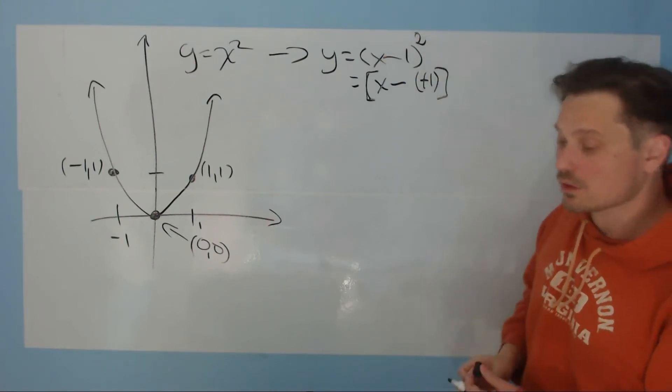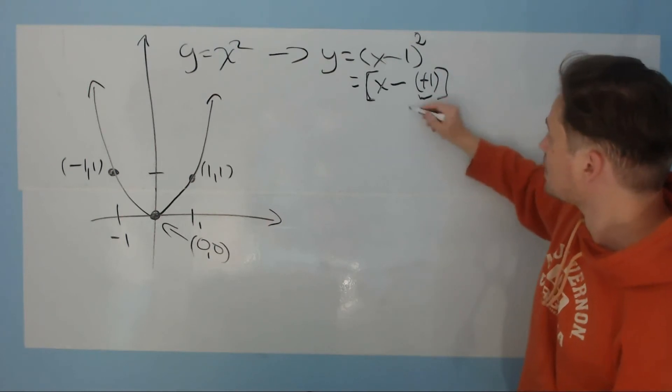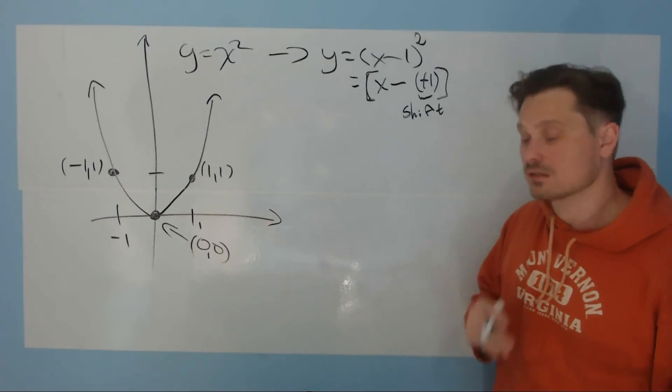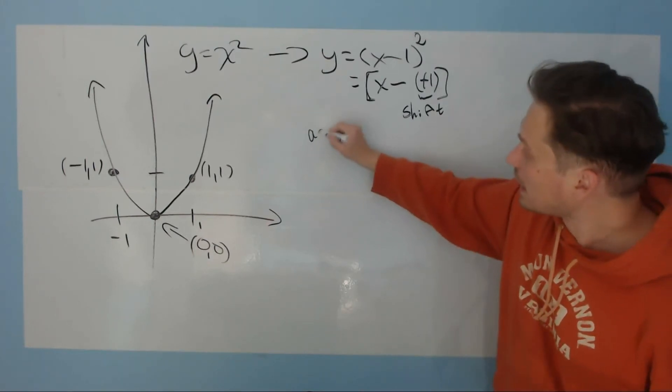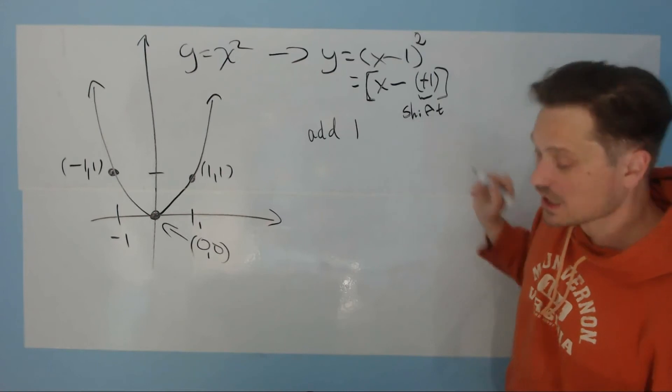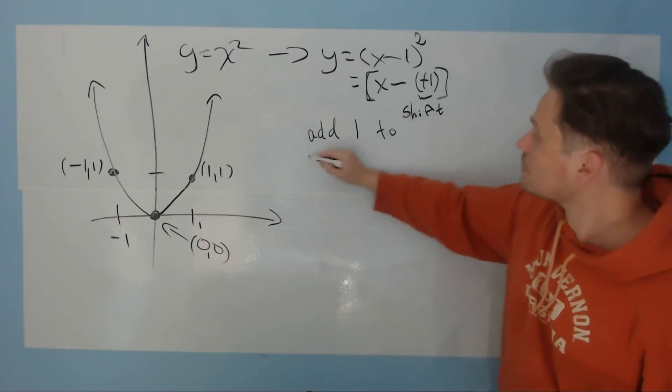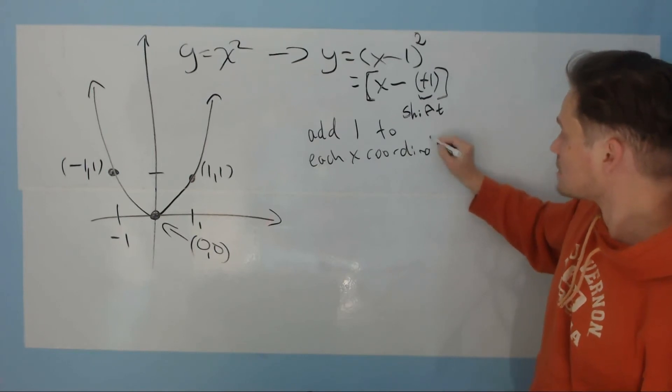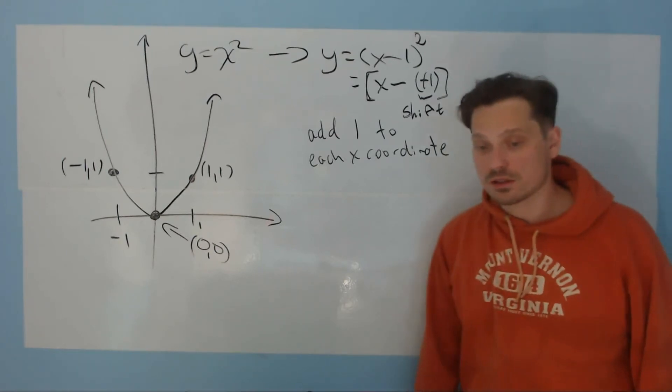That positive 1 right here in this position, this is the shift. What it tells you to do as an instruction that you can follow easily is simple. Add 1 positive to each x-coordinate. That is the correct instruction to interpret here.